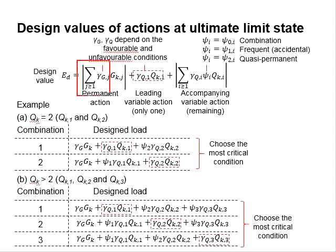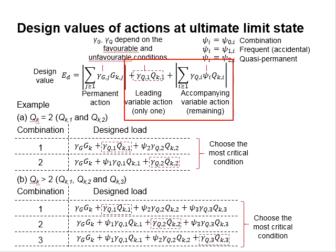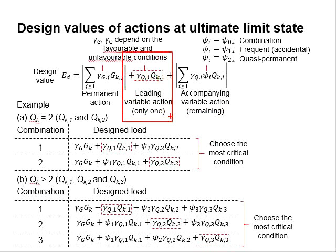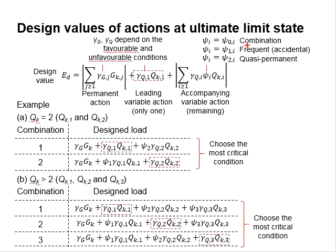The permanent actions can be more than one, and can be in the form of favorable or unfavorable conditions. As for the variable actions, there will be only one leading variable while the remaining are considered the accompanying variables. For the leading variable actions, the factor of safety of the action is to be multiplied with. As for the accompanying variable actions, there is an additional factor of psi, which represents the conditions of combination, frequency, or quasi-permanent.